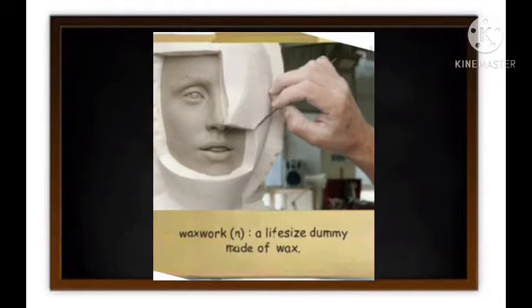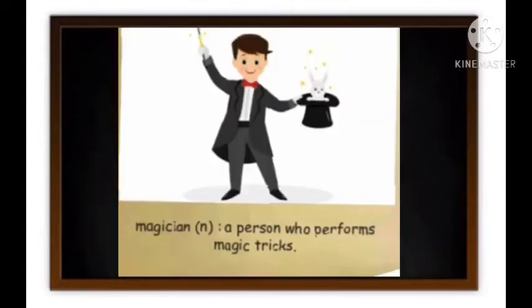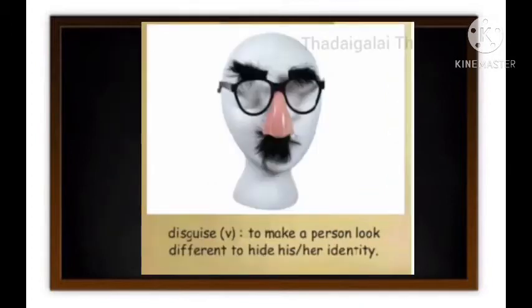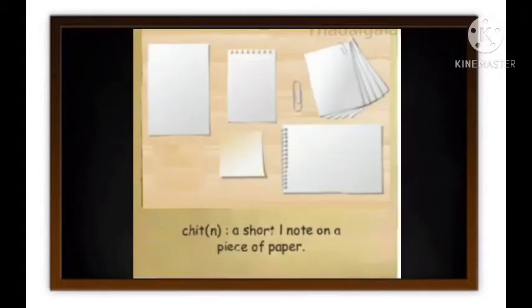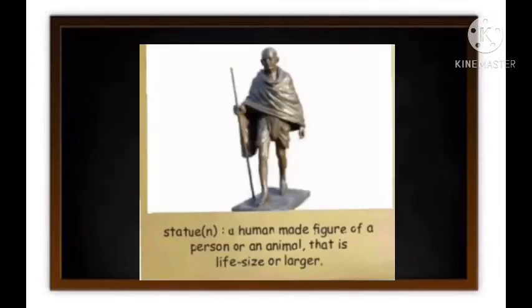Wax work: a lifelike dummy made of wax. Magician: a person who performs magic tricks. Disguise: to make a person look different, to hide his or her identity. Chit: a short note on a piece of paper. Statue: a human-made figure of a person or an animal that is life-size or larger.